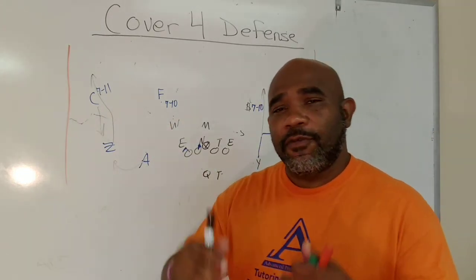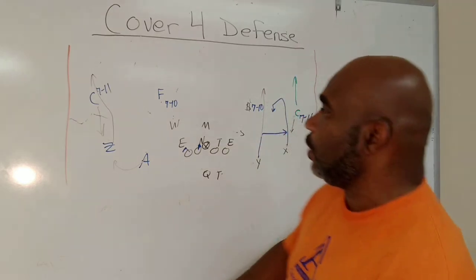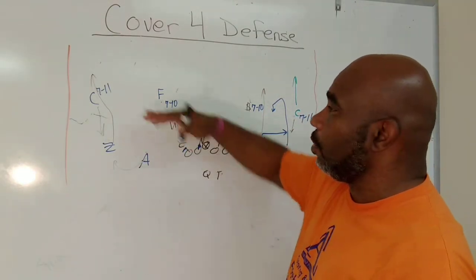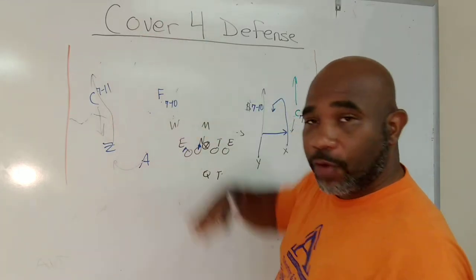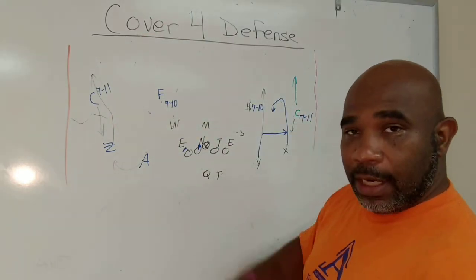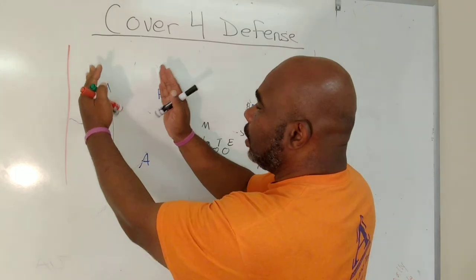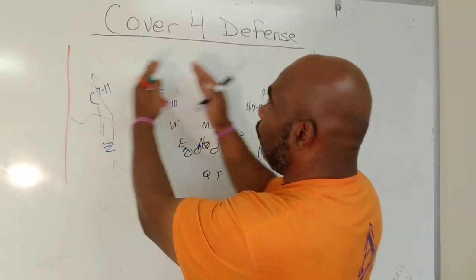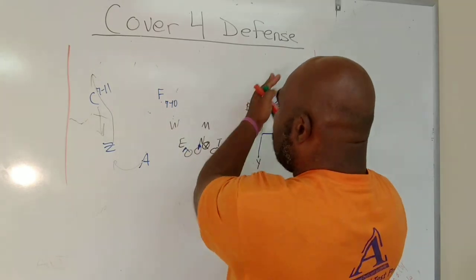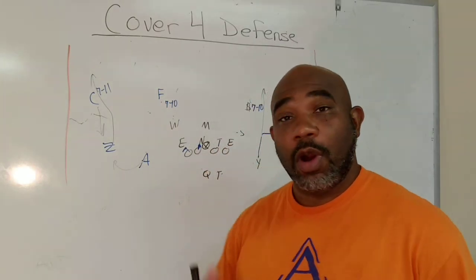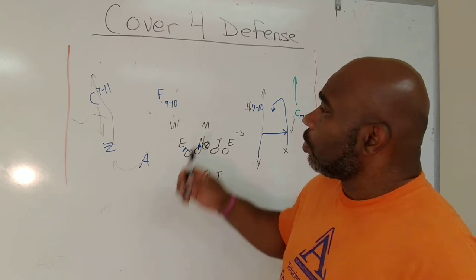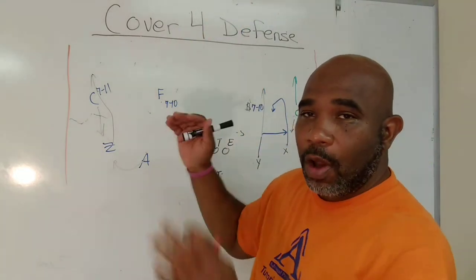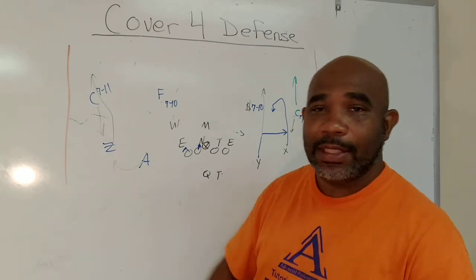So to quickly recap, the first thing we said was prevent defense. What do all of these versions have in common? Well, I have the ability to defend four verticals up the field. And in doing so, I can basically separate my field into quarters. That's why it's called quarters coverage. One-fourth of the field, two-fourths, three-fourths, four-fourths of the field. Prevent defense. Everybody just run deep. We're going to give up all the short stuff. We don't care. We're going to rally and tackle.